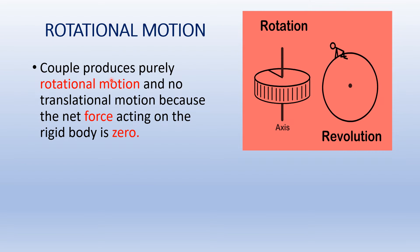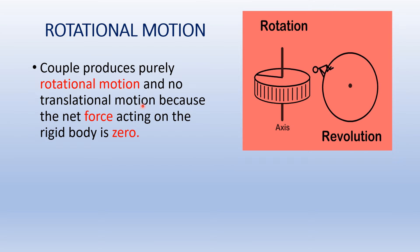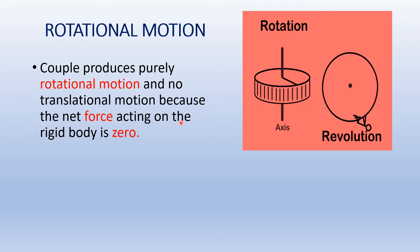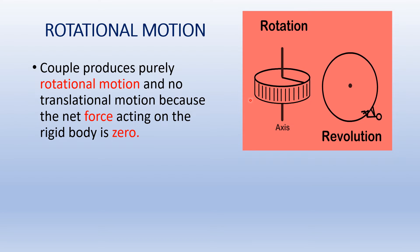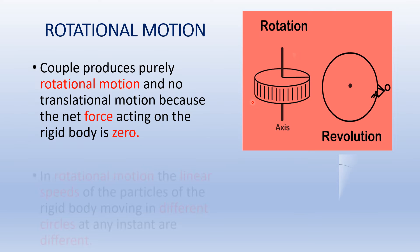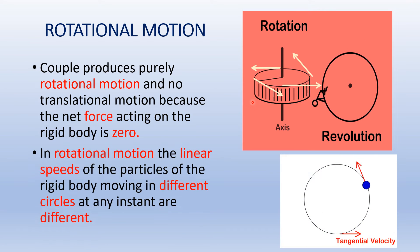This couple produces purely rotational motion and no translational motion, because the net force acting on a rigid body is zero. Once this couple produces a rotational motion as shown in this GIF, it is found that the net force acting on this rigid body is zero. That is, the torque must be constant.